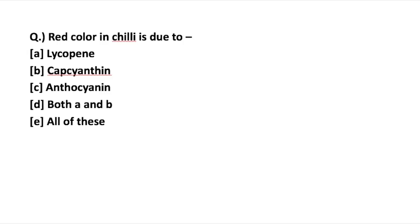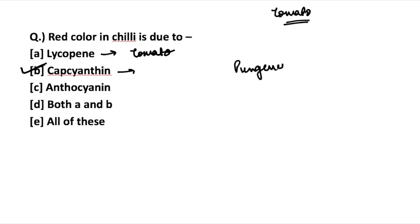The next question: the red color in chili is due to which pigment? In the previous video, I discussed that the red color in tomato is due to Lycopene. For red color in chili, the answer is Capsicinethin. So Capsicinethin is responsible for the red color in chili. Additionally, the pungency in chili is due to Capsicutin — it is due to the presence of Capsicutin that chili is pungent in flavor.